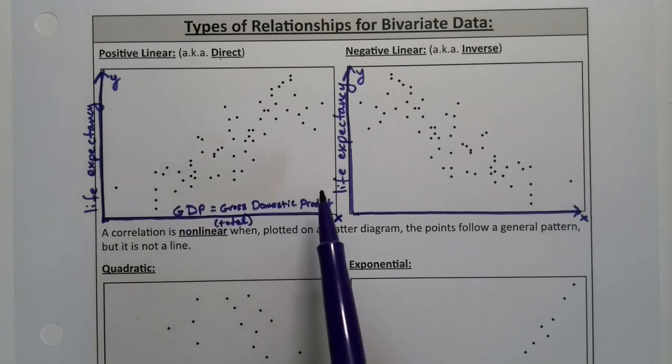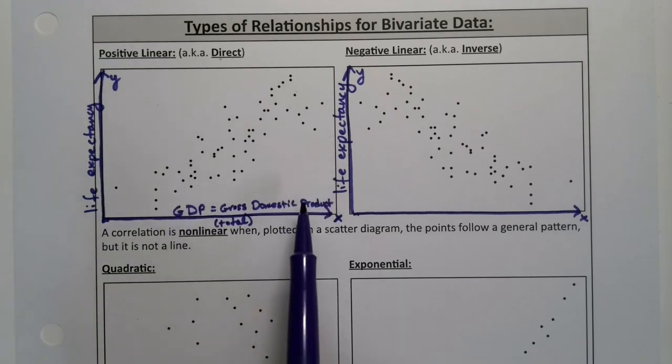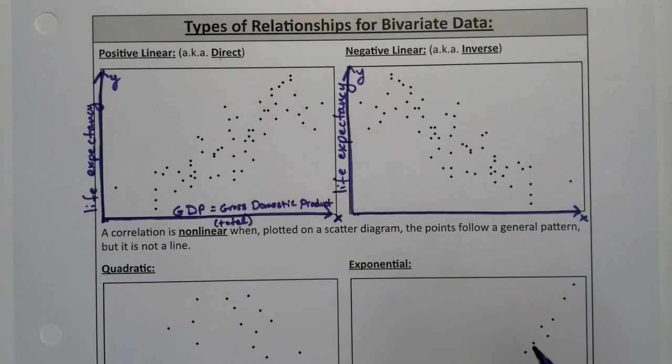So if a country is wealthier, it has higher life expectancy. Makes sense, right? This is a measurement of the wealth of a country. So the larger it is, the larger the life expectancy.